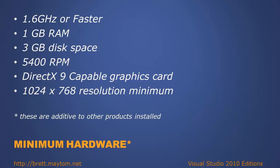The minimum hardware specs for Visual Studio 2010 are: a 1.6GHz machine or faster, 1GB RAM, 3GB of disk space, a 5400rpm disk drive, a graphics card capable of running DirectX 9, and a minimum screen resolution of 1024x768. Note that these requirements are additive on top of your operating system and other installed products. For example, if you're running SQL Server, you'll need memory for the OS, memory for SQL Server, and an additional 1GB of RAM for Visual Studio.